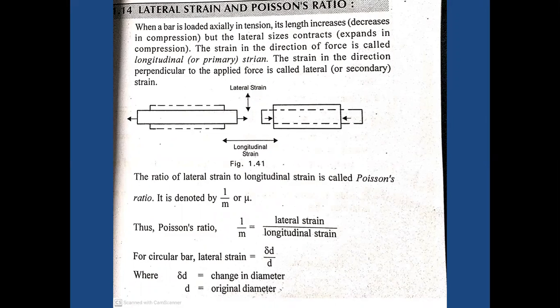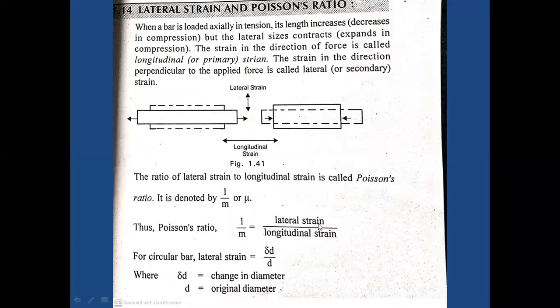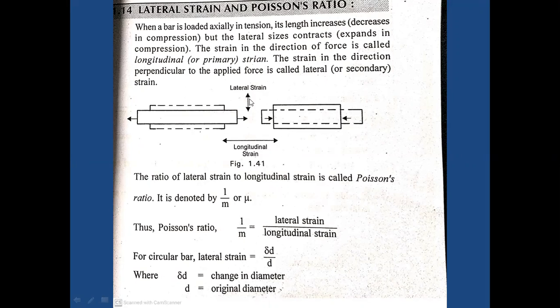Lateral strain: whenever the body tends to change in the length direction we call it longitudinal strain. Whenever the body tends to change in its diameter we call it lateral strain. Longitudinal is in the length direction; lateral is in the diameter direction. Poisson's ratio is defined as lateral strain divided by longitudinal strain — the ratio of lateral strain to linear strain.